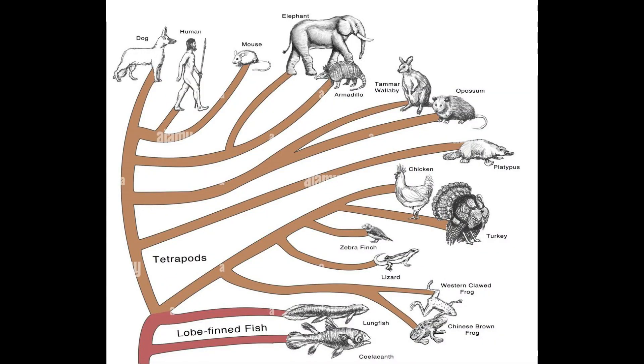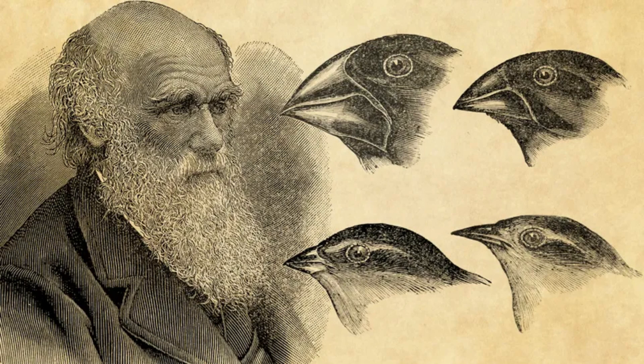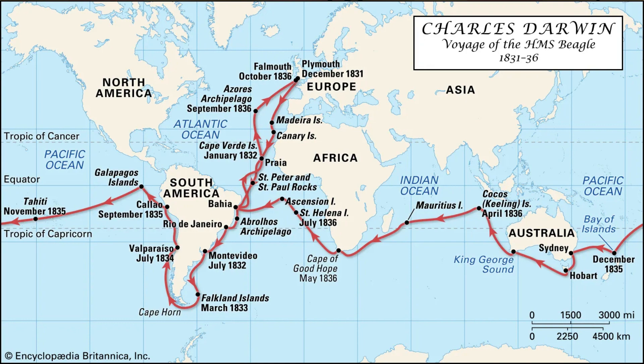In everyday English, evolution simply means change. In biology, evolution states that all living organisms came from earlier forms of life. The theory of evolution by natural selection explains why evolution occurs. Charles Darwin, the person who proposed this theory, spent over 20 years traveling around the world and making observations before he fully developed his theory. Today, nothing in biology makes sense except under the light of evolution. All the complex creatures we see today have evolved from earlier creatures through minor changes called mutations.